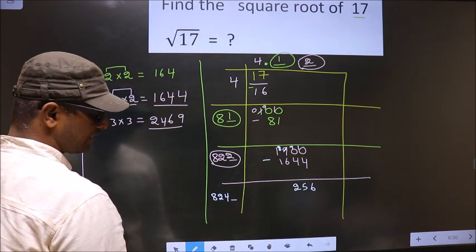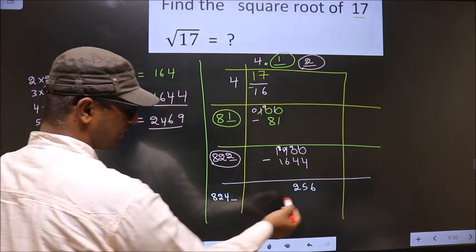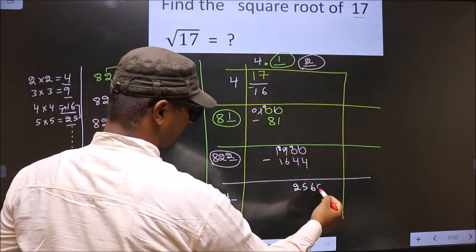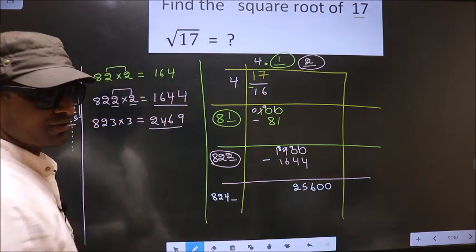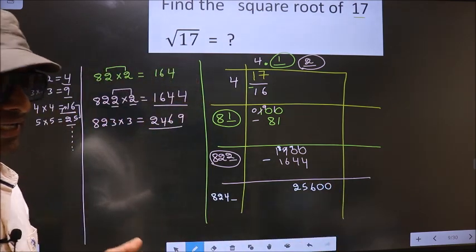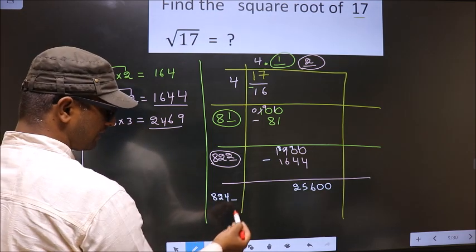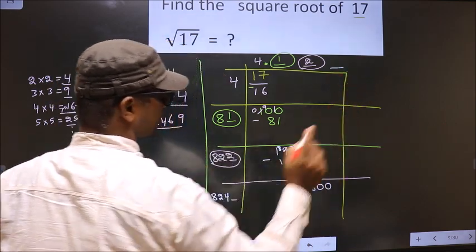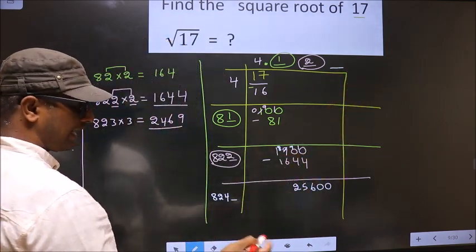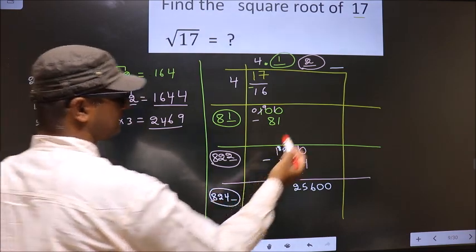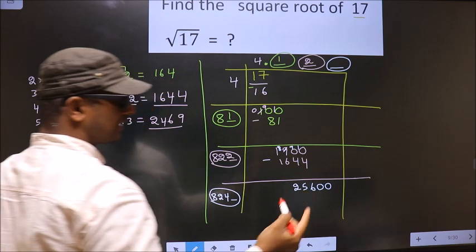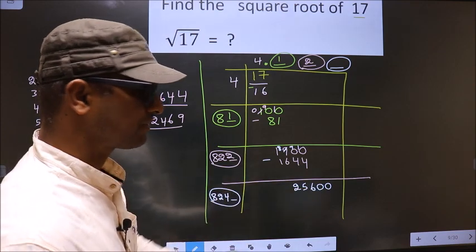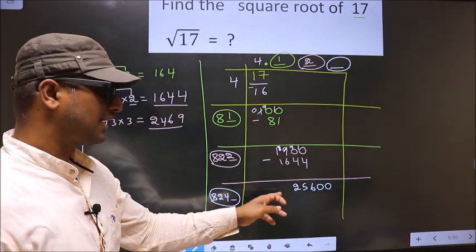Now I should write a number here, but when I write a number here, this number will be smaller than this. The decimal we already have, so directly take two zeros. The condition is: whatever number I write here, I should write the same number here as well. And when you multiply this number by this number, the resulting number should be either equal to or smaller than this — but not larger than this.